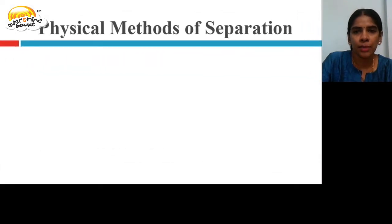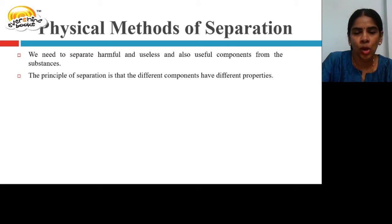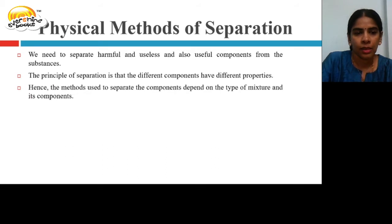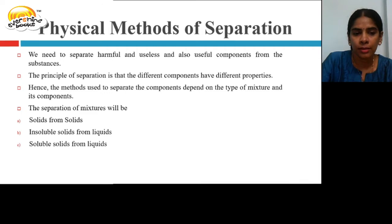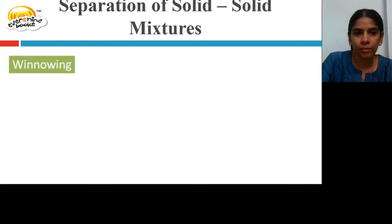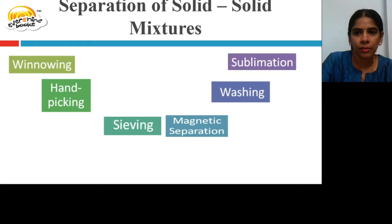Let us learn about the physical methods of separation. The principle of separation is that different components have different properties. Hence, the methods used to separate components depend on the type of mixture. Separation methods include: solid from solid, insoluble solid from liquids, and soluble solids from liquids. Methods for solid-solid separation include winnowing, hand-picking, sieving, magnetic separation, washing, and sublimation.